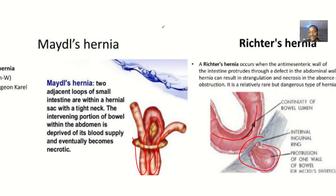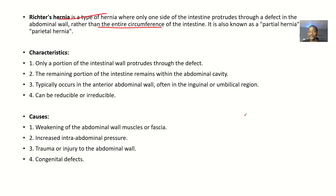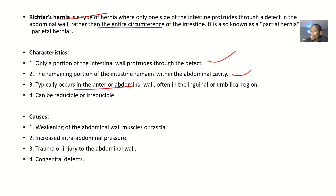This type is considered mild because just one part of the intestine protrudes while the other part is still free for bowel activity. Only one portion of the intestinal wall protrudes through the defect; the remaining portion stays within the abdominal cavity. It typically occurs in the anterior abdominal wall, often in the inguinal region or the umbilical region. It can be reducible or irreducible.